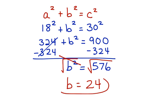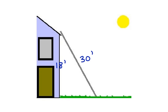Now, let's use this 24 and go back and substitute it into the diagram. Here's the diagram of our problem once again. We had 18 feet for this distance, we had 30 feet at the length of the ladder, and now we know that this distance is actually 24 feet.